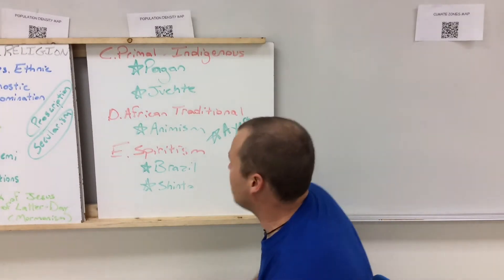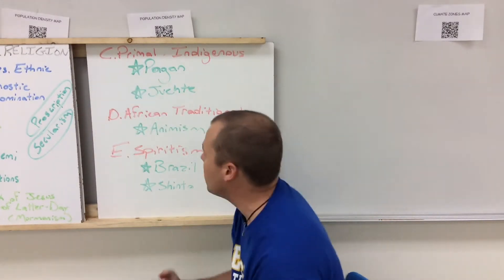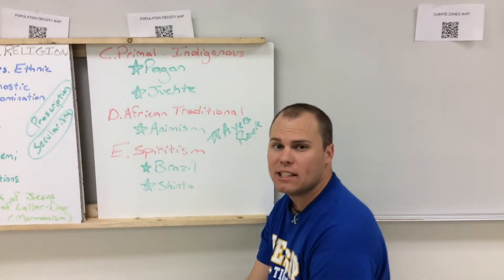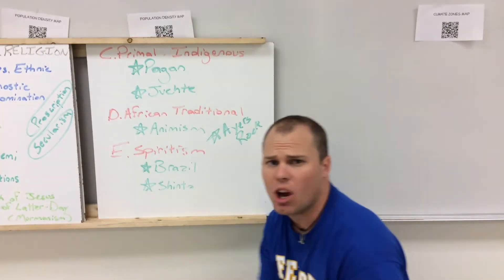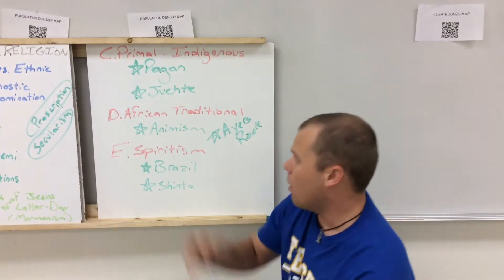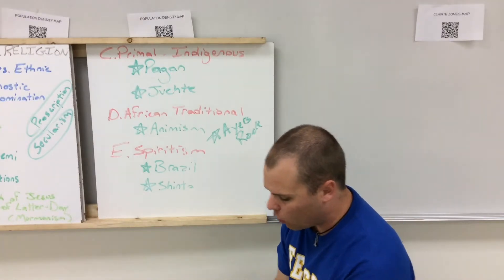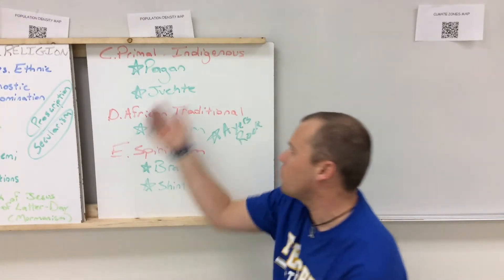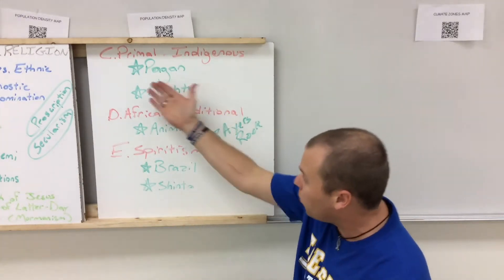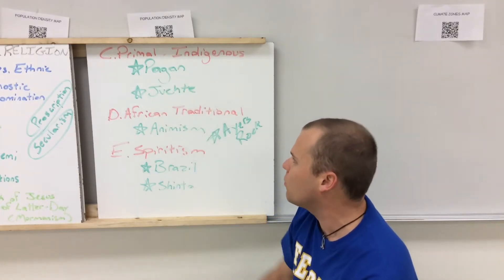The next type of ethnic religion is the primal indigenous category. Paganism refers to old, ancient types of spiritual worship, like those practiced by the ancient Greeks and Romans. When you hear about pagan religions, that refers to these ancient types of religious practices.